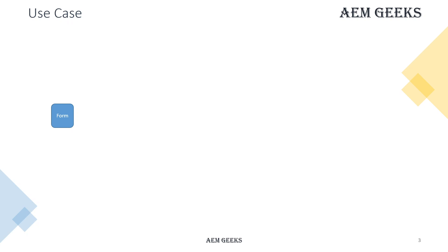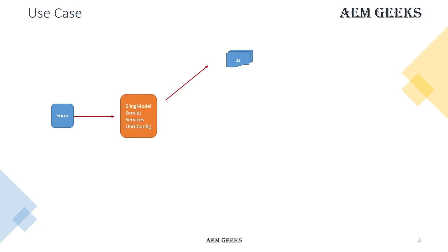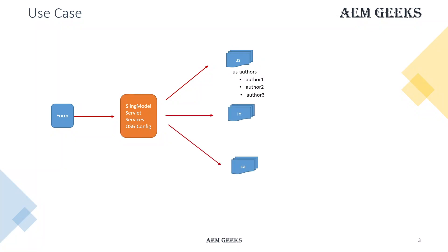At a high level, we will have a form. As soon as we submit that form, the data will be stored under a country-specific site. We will create one node per submission. The same applies for other country sites as well - as per the country site the form is used on, it will store the form data under that specific site.